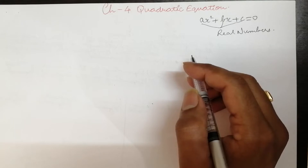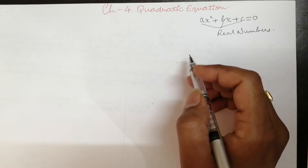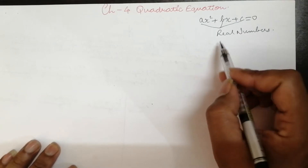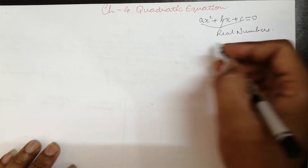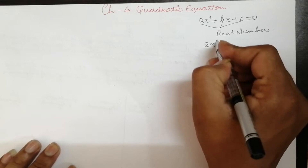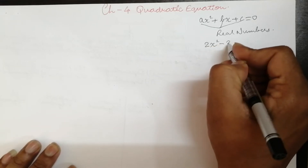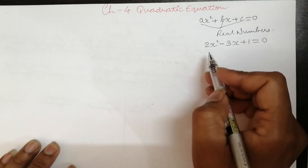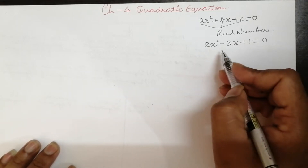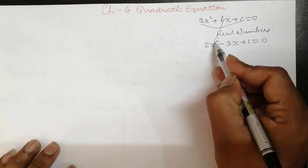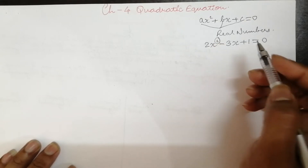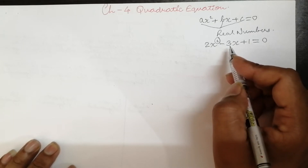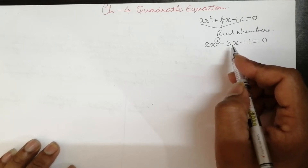I have completed pair of simultaneous linear equations. Now quadratic equation. After that we will see arithmetic progression. So in quadratic equations, see the example: 2x² - 3x + 1 = 0. This is the example of a quadratic equation. We call it quadratic because the highest degree here is 2. That is why we call it a quadratic equation. Quadratic polynomial and quadratic equation — they are the same.